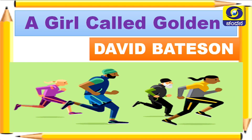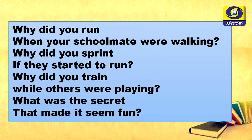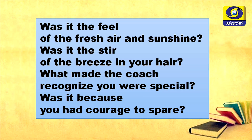Now we are moving on to our poem, 'A Girl Called Golden' by David Batson. Please read along with me: Why did you run when your schoolmates were walking? Why did you sprint if they started to run? Why did you train while others were playing? What was the secret that made it seem fun? Was it the feel of the fresh air and sunshine? Was it the stare of the breeze in your hair?